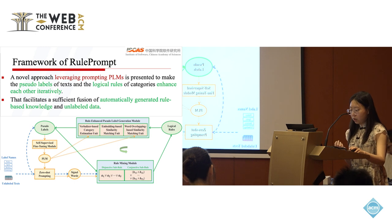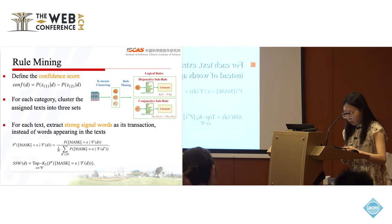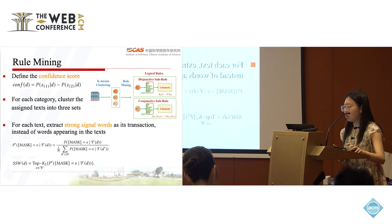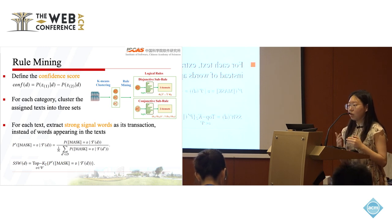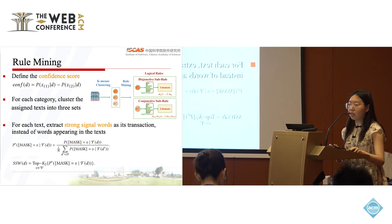In the rule mining module, first, we define the confidence score for each pseudo-label as the difference value between the highest and the second-highest probability. Then, based on these scores, we cluster the unlabeled text into three sets for each category. Meanwhile, for each text, we extract strong signal words as its transaction instead of the words appearing in the text.